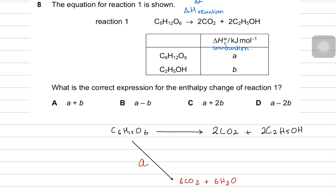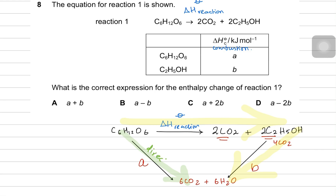B is the combustion of ethanol, which makes carbon dioxide and water. You can see that 2 carbon dioxide are already produced here and you can get 4 carbon dioxide from this compound — that is B. The first arrow is the enthalpy for reaction. The combustion of ethanol is the indirect method, while the combustion of the reactant C6H12O6 is the direct method — step one and two being the indirect method.